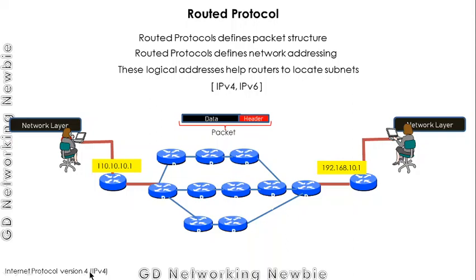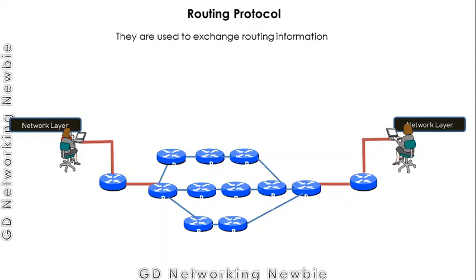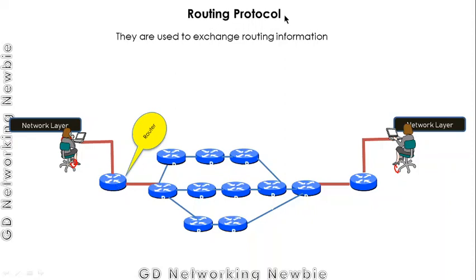Examples of routed protocols are IPv4 — Internet Protocol version 4 — and IPv6. Those are examples of routed protocols. Now let's move to routing protocol. Routing protocols are used to exchange routing information, which is needed to find out the path. For example, when there are multiple paths from one node to another, determining which path to follow is the job of the router — but the router needs protocols to do that, and those are routing protocols.